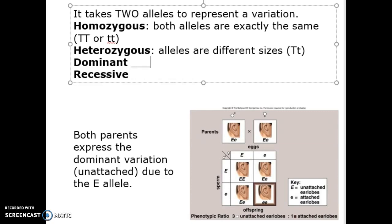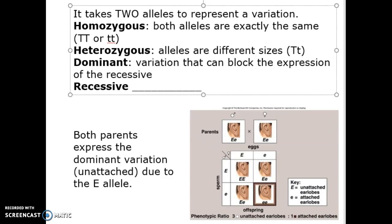When we look at variations, some variations are dominant. A dominant variation is going to be an allele or a variation that can block the expression of the recessive. We represent this with a capital letter, and it could be big T, it could be big S, it could be big A, big H, et cetera. Any capital letter represents the dominant variation. But keep in mind, dominant can block the expression of the recessive. It does not mean more common.